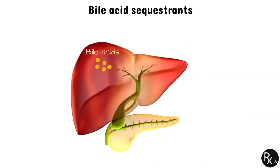Bile acid sequestrants are the last class of medications that decrease cholesterol. Bile acids are created in the liver, stored in the gallbladder, and then excreted into the gut, where they help in the absorption and digestion of lipids. In the small intestine, bile acids and salts that are negatively charged are bound by bile acid sequestrants, which act as ion exchange resins. The resulting insoluble complex prevents bile acids from being reabsorbed and ultimately causes their excretion. Because bile acids are produced from cholesterol, this increase in excretion of bile acids increases the demand for their production. To meet this new demand, liver cells increase the number of LDL receptors on their surface, which attracts more LDL cholesterol. The net effect is a decrease in the amount of circulating LDL.